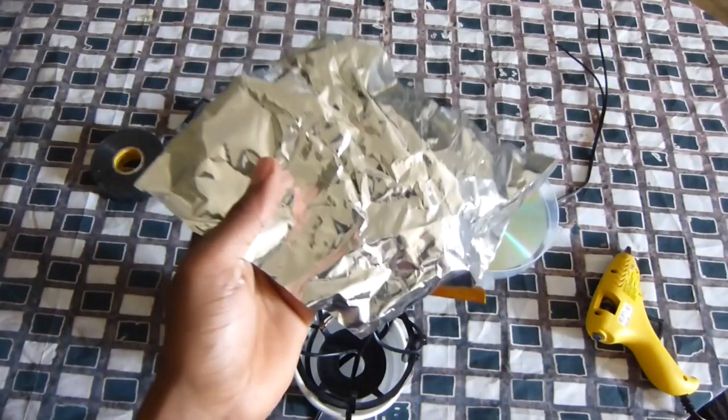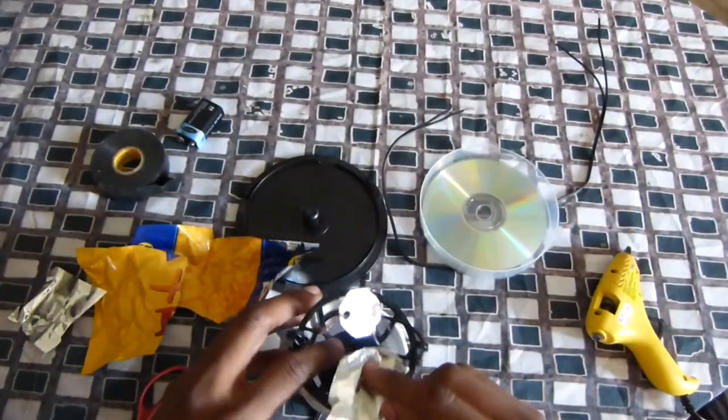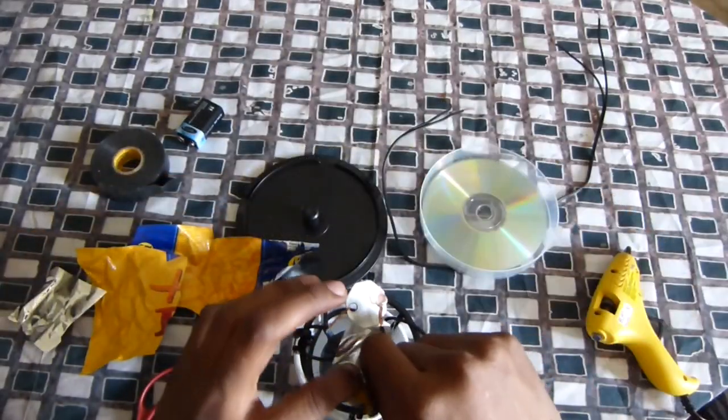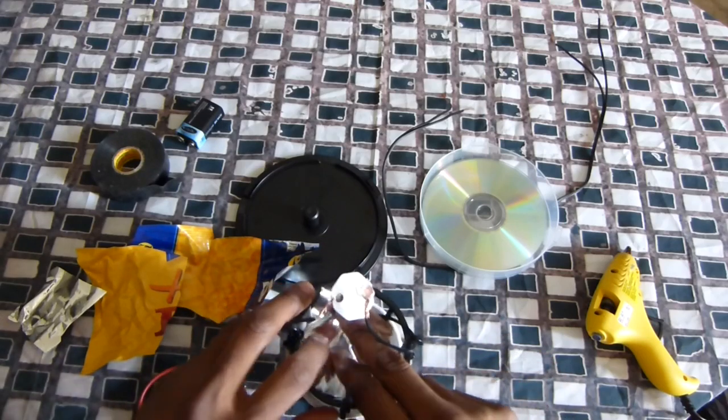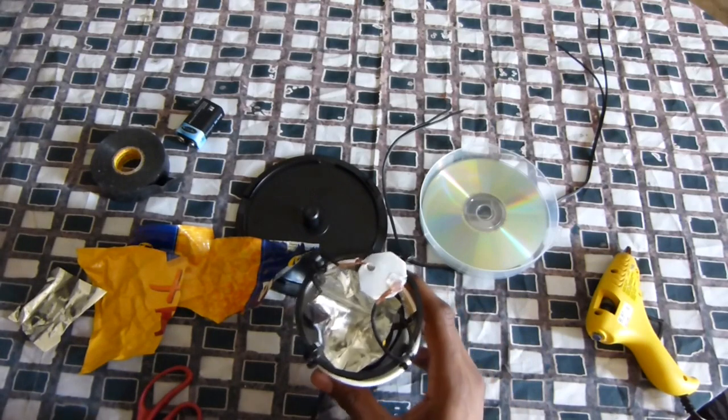A piece of potato chip bag - put it inside underneath your coil like that.